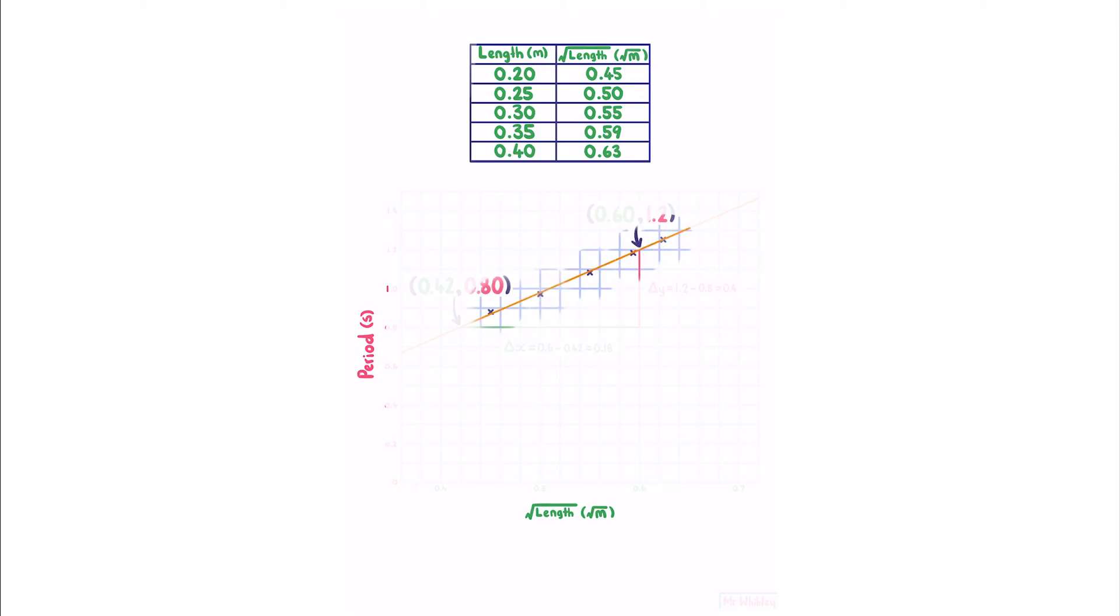Knowing that I need to redo my graph, with the square root of length on my x-axis, so I need to take my length values, and square root each one. Note that my unit is no longer meters, it's square root meters, or meters to the power of a half. And so here are my points, from which I've drawn a line of best fit, and from this line I've identified two points.